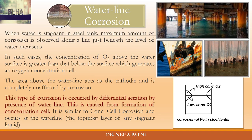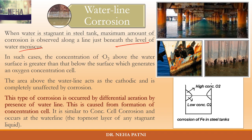You might have observed that when there is a steel tank or metal tank normally filled with water, after some time there is corrosion taking place — and the maximum corrosion occurs just below the water level meniscus. You can see this on poles or on a ship's hull. The water level creates conditions due to which corrosion occurs just beneath the water meniscus — and that's what is water line corrosion.